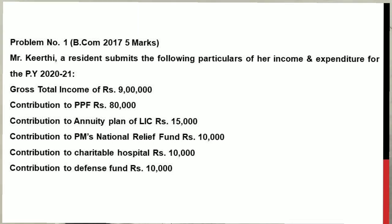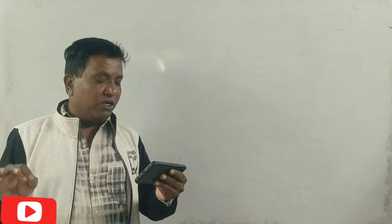Income Tax problem. The resident submits the following particulars of his income and expenditure for the previous year 2021. Gross Total Income: 9 lakhs. Contribution to PPF: 80,000. Contribution to Annuity Plan of LIC: 15,000. Contribution to PM's National Relief Fund: 10,000. Contribution to Charitable Hospital: 10,000. Contribution to Defence Fund: 10,000. In this case, we have two deductions to calculate the total income and tax liability.